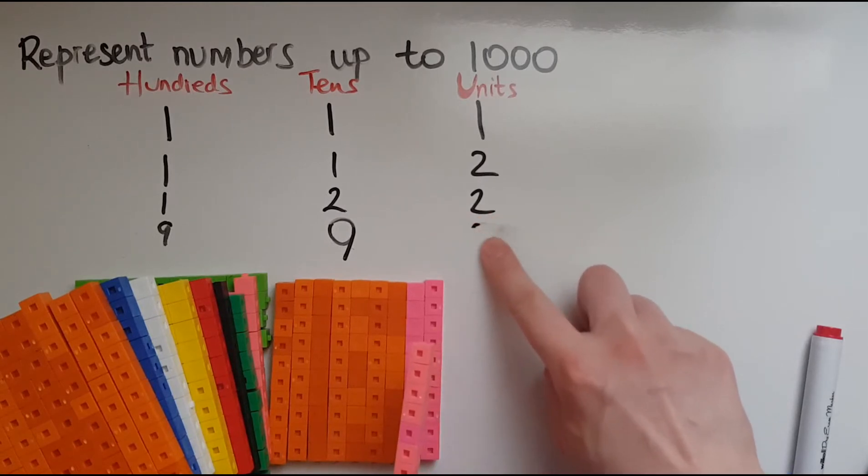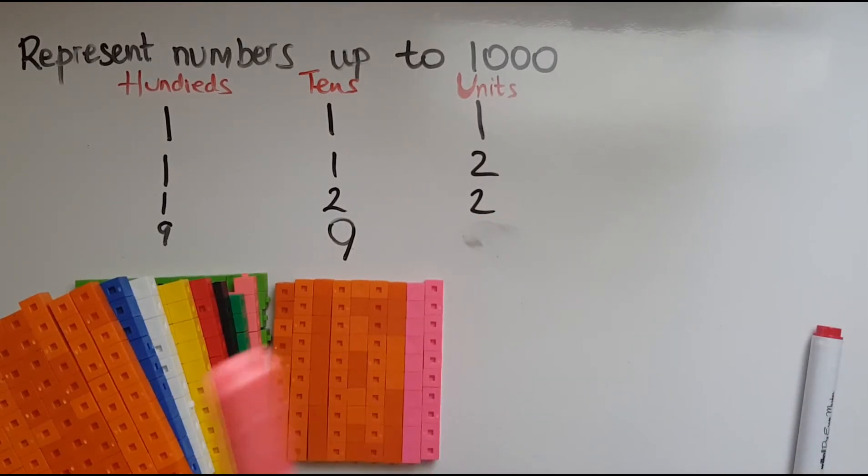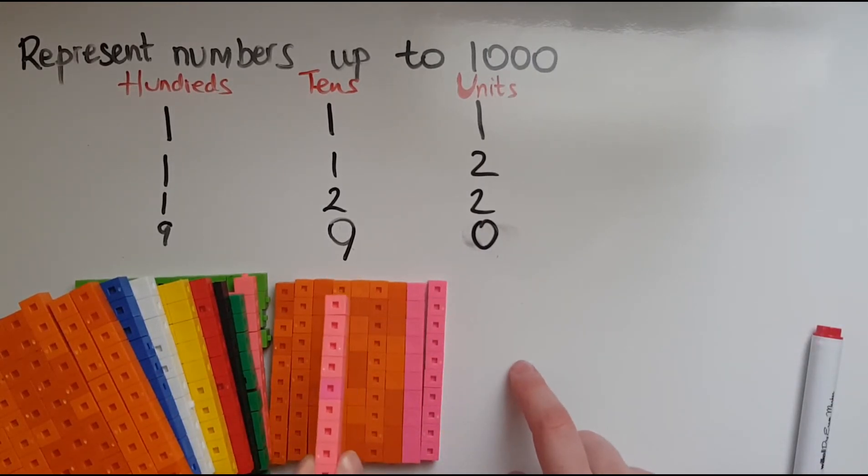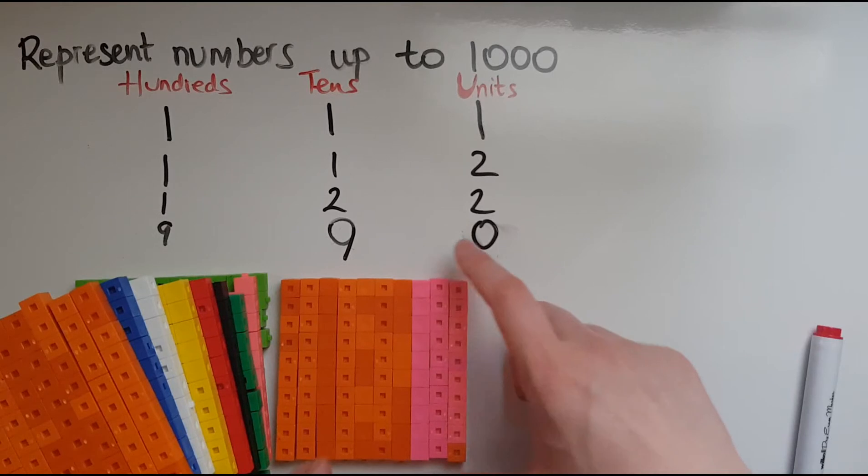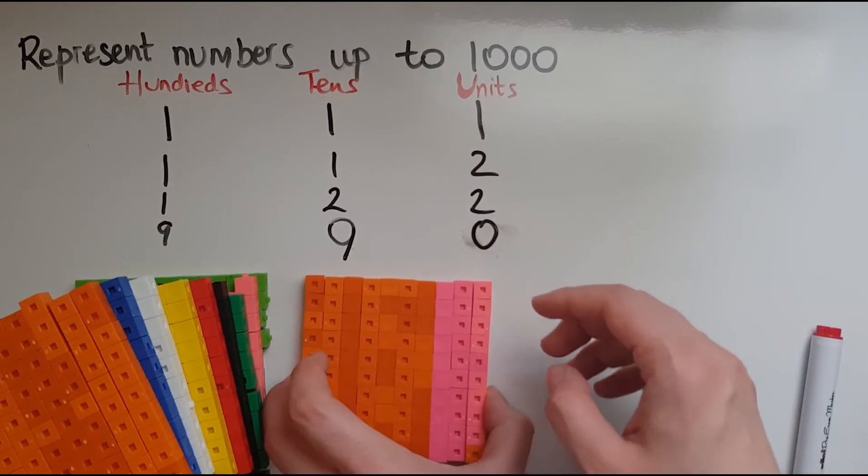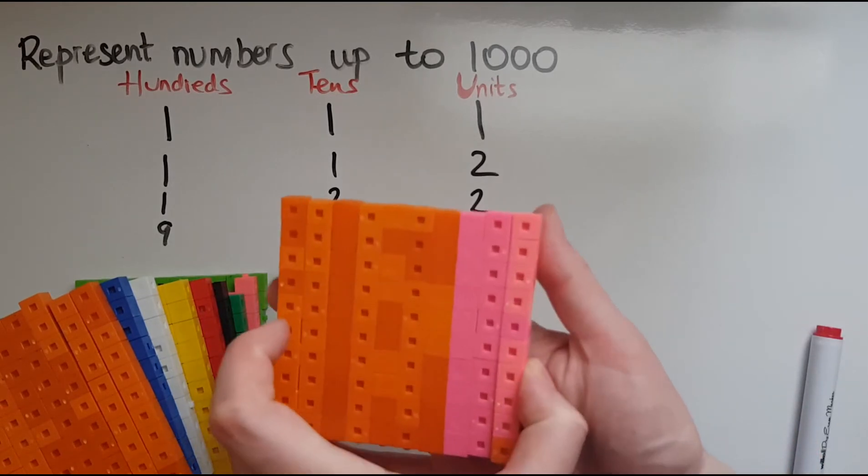So I'll change this to a zero and these were 9 but now they've become 10. So really I can't keep them in the tens any longer because this has made a block of a hundred.